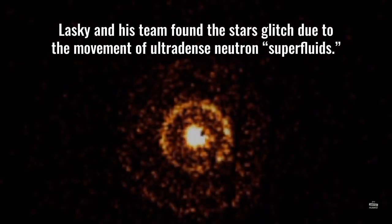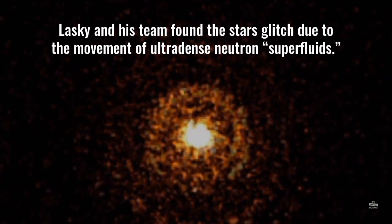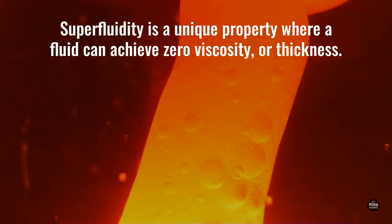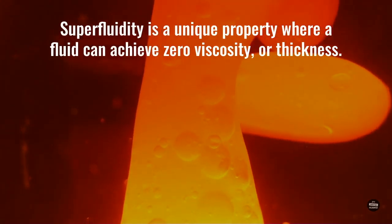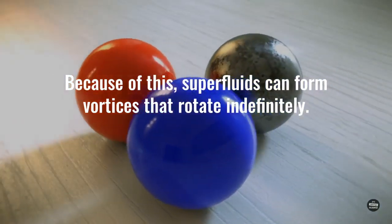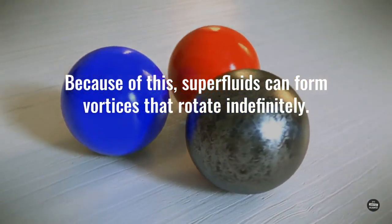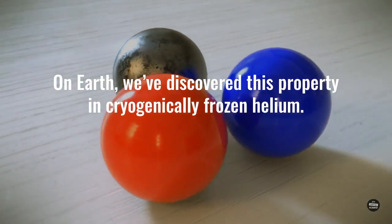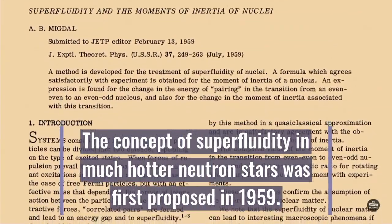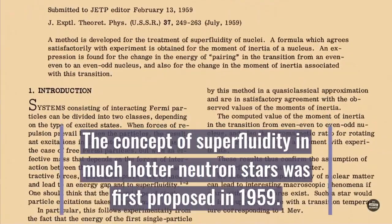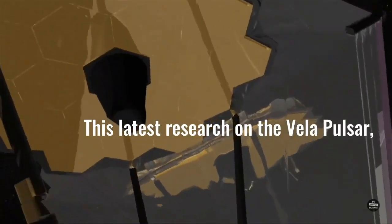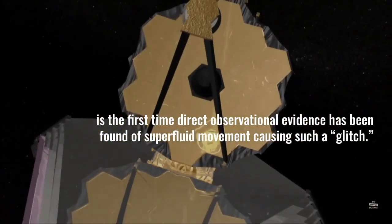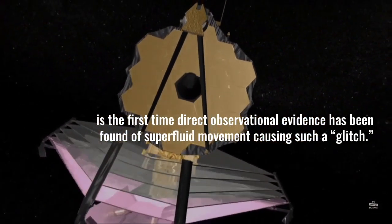Lasky and his team found the star's glitch due to the movement of ultra-dense neutron superfluids. Superfluidity is a unique property where a fluid can achieve zero viscosity or thickness. Because of this, superfluids can form vortices that rotate indefinitely. On Earth, we've discovered this property in cryogenically frozen helium. The concept of superfluidity in much hotter neutron stars was first proposed in 1959. This latest research on the Vila pulsar is the first time direct observational evidence has been found of superfluid movement causing such a glitch.